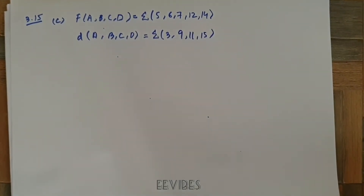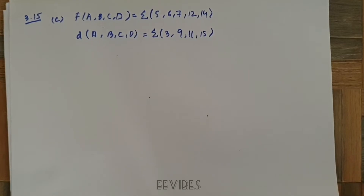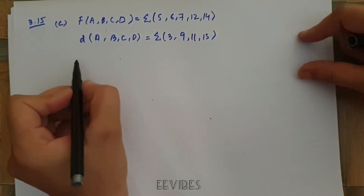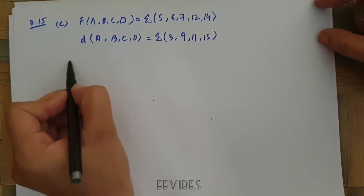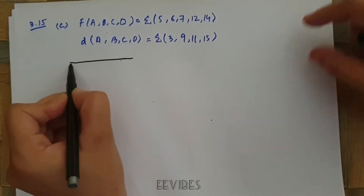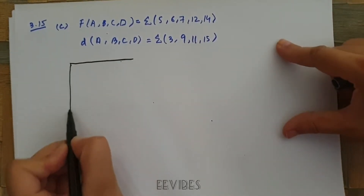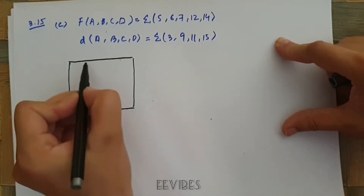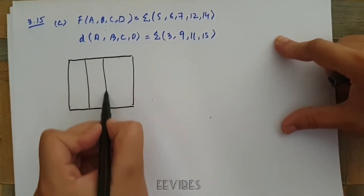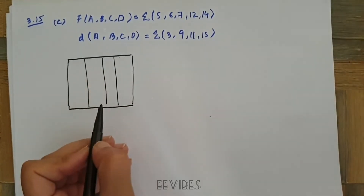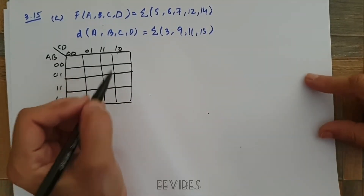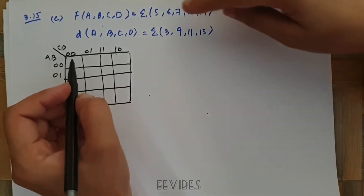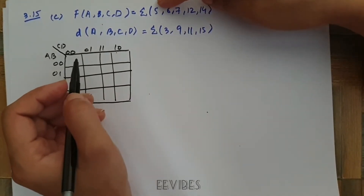Our task is to simplify this Boolean function using the K-map. Since four variables are involved, I'll construct a four-variable K-map quickly.